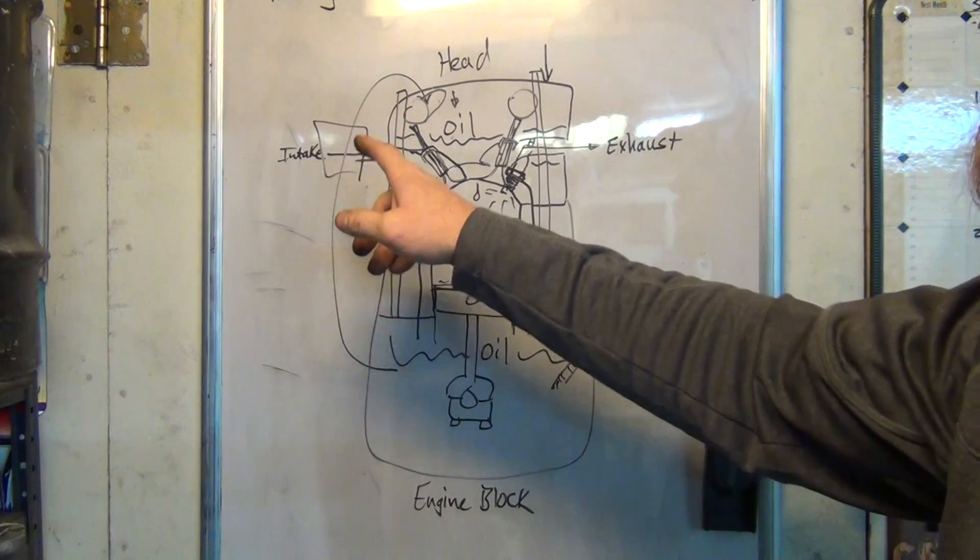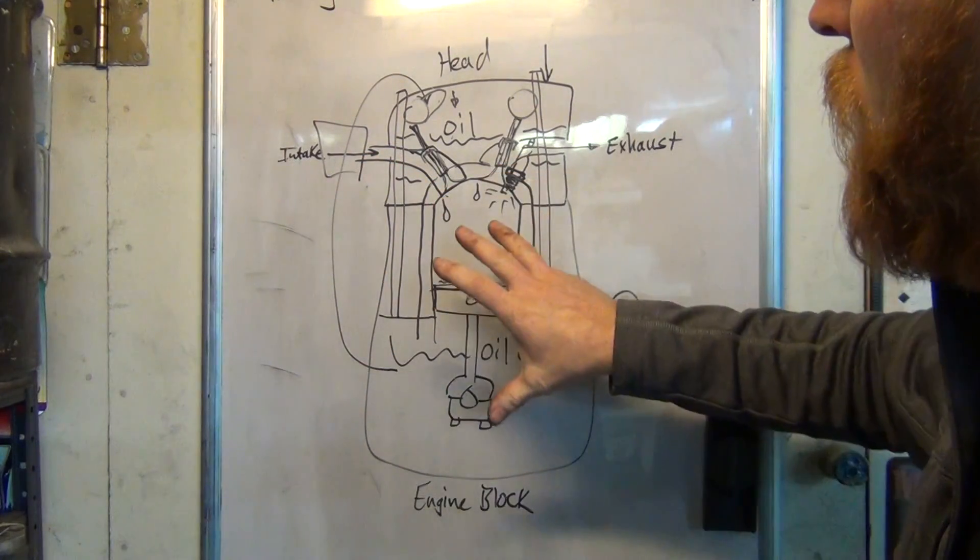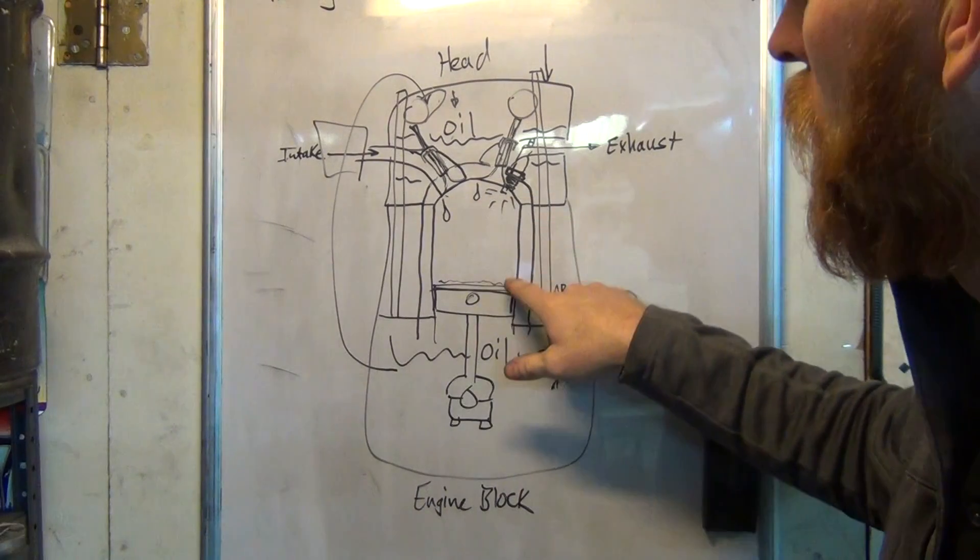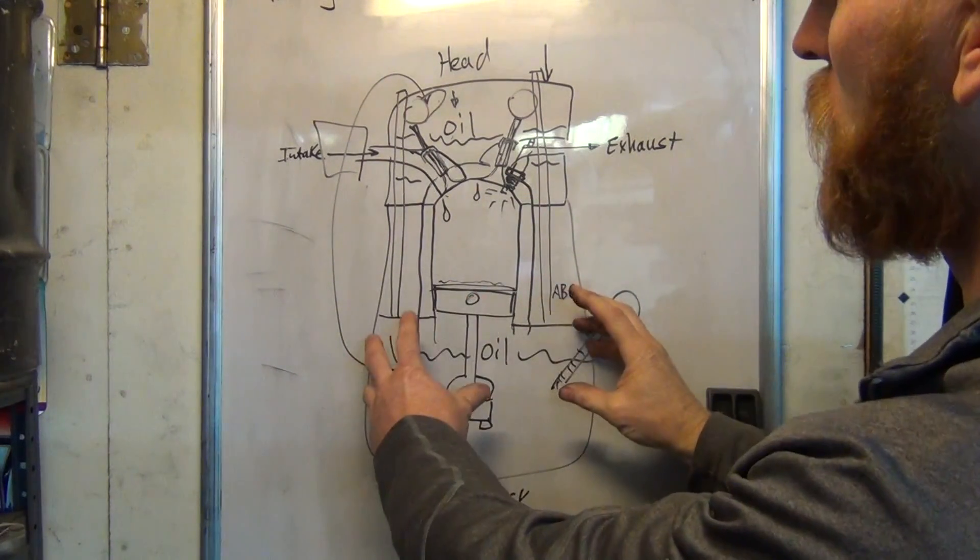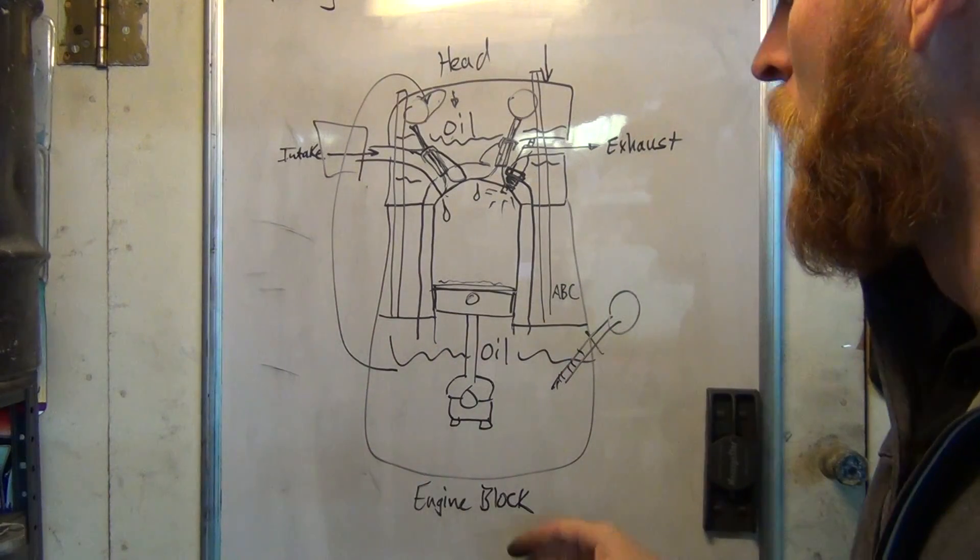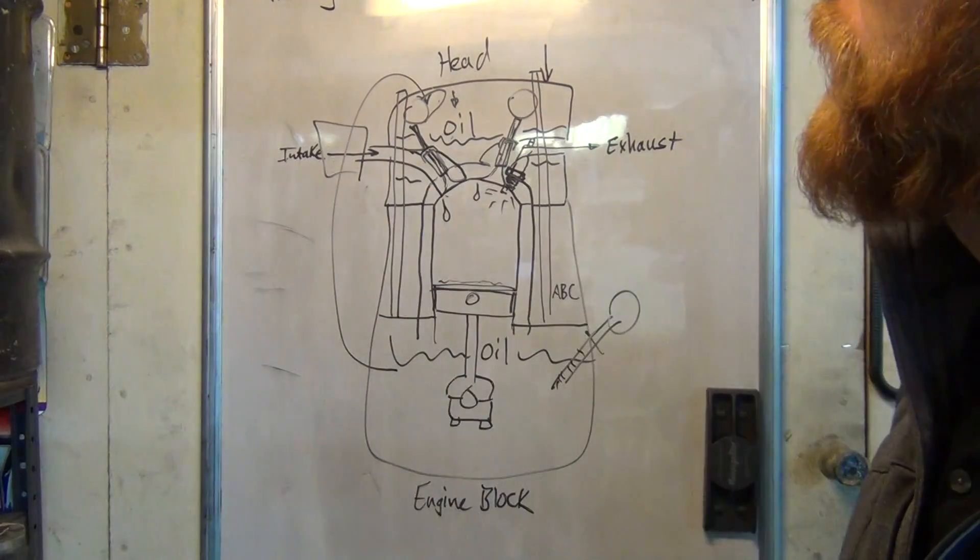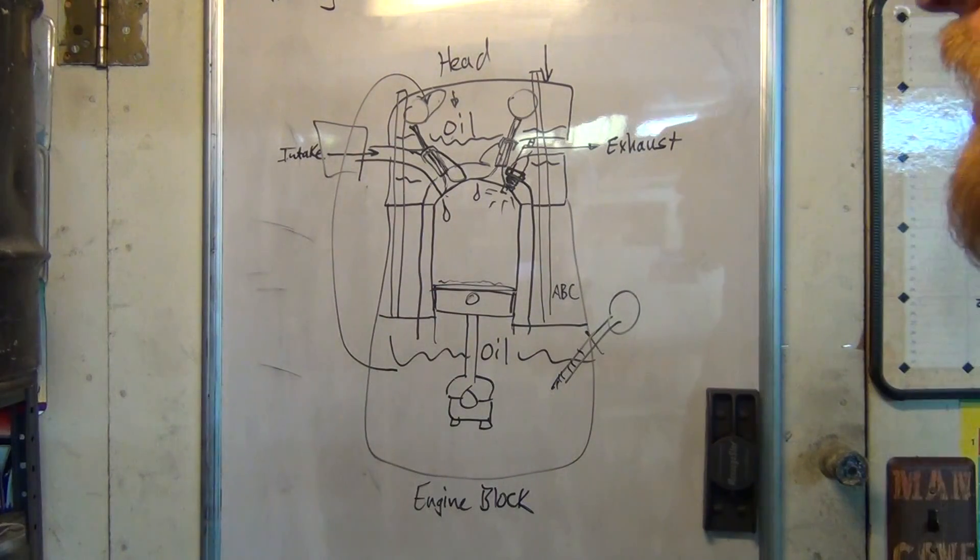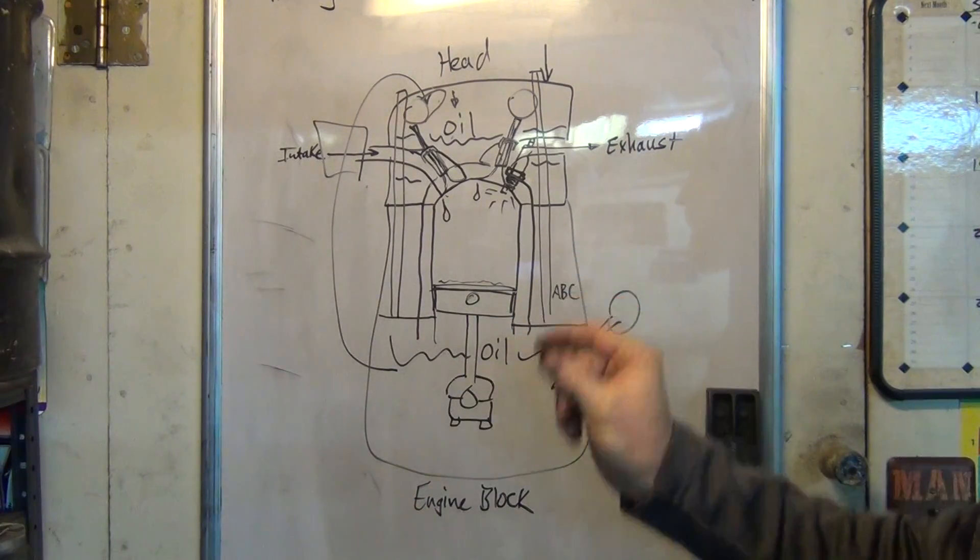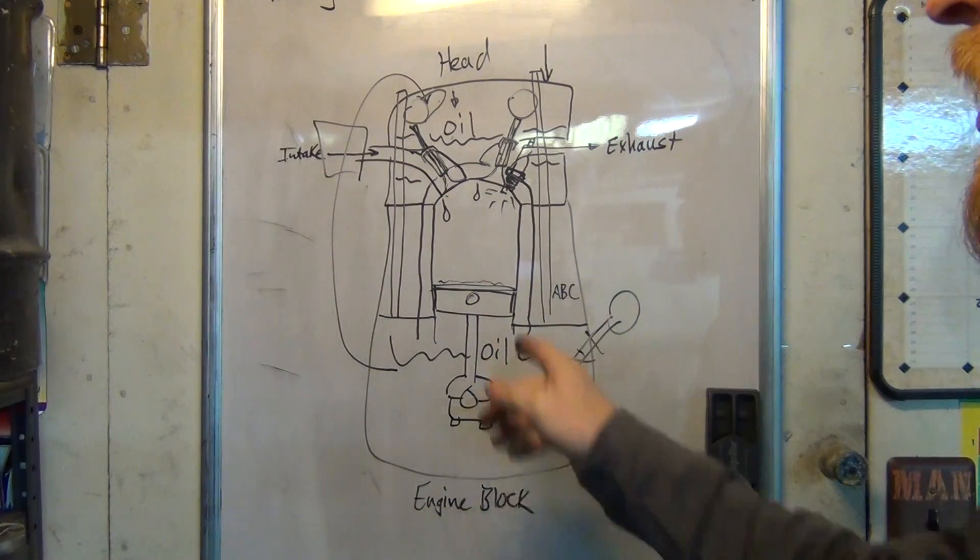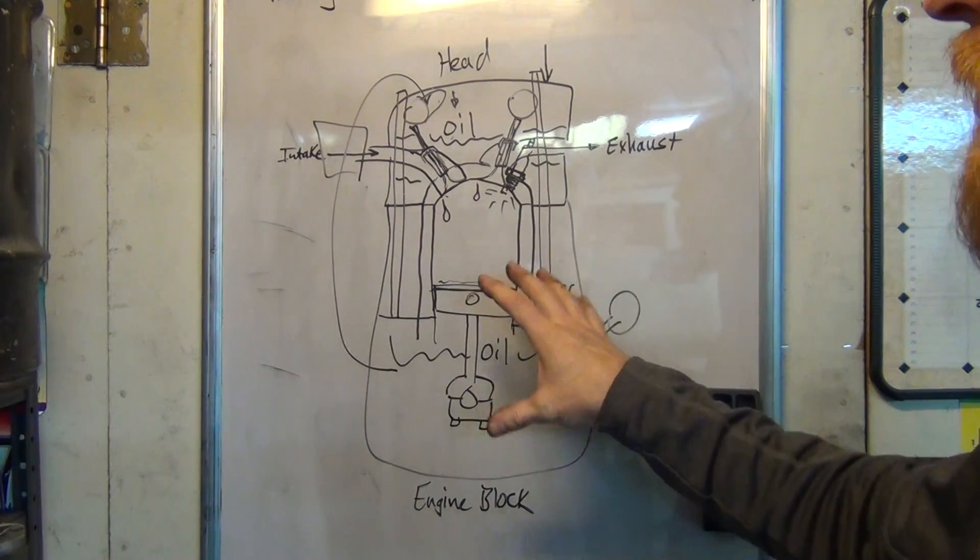As I said with the PCV positive crankcase ventilation system, a little bit of the bang factor that happens here goes past the piston rings. When that happens, this becomes pressurized and you get oil leaks and stuff. So what they do is they have a positive crankcase ventilation system that vents it around back to the intake. And so you have a clean air and then a valve, you know that it's got a little rattle ball in it that causes a positive air flow going through the intake so that it doesn't build up pressure here.